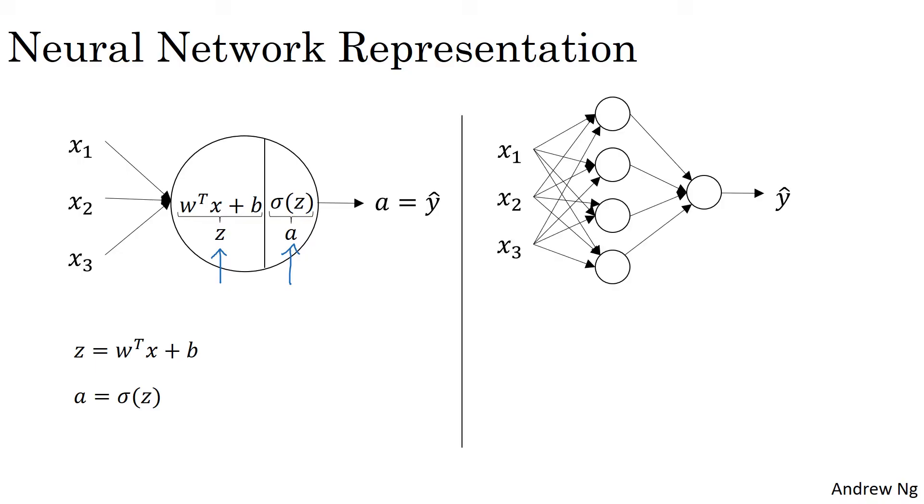Let's start by focusing on just one of the nodes in the hidden layer. Let's look at the first node in the hidden layer. So I've grayed out the other nodes for now. Similar to logistic regression on the left, this node in the hidden layer does two steps of computation. The first step, think of as the left half of this node, it computes z equals w transpose x plus b.